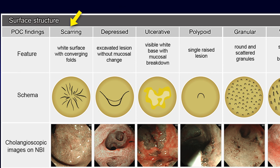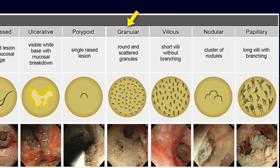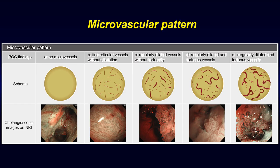Surface structure included scarring, depressed, ulcerative, polypoid, granular, villous, nodular, and papillary lesions.